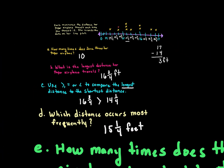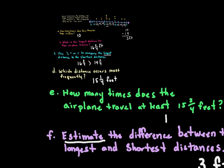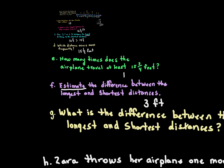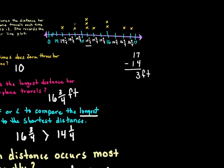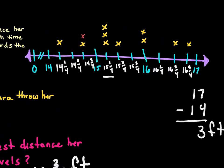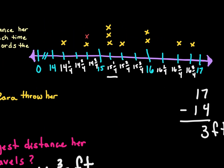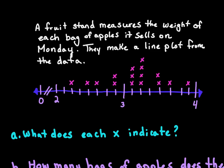That, my friends, is how we use a line plot to help answer questions. It displays data in an organized way and allows us to read information more quickly. Now, a fruit stand measures the weight of each bag of apples it sells on Monday.